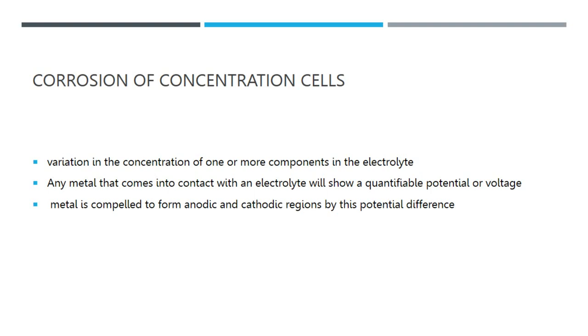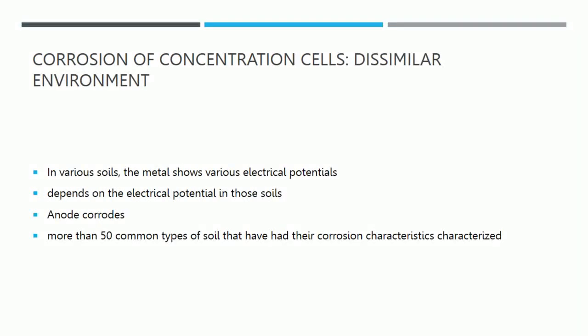Pipelines frequently pass through a variety of soil types, and in various soils the metal shows various electrical potentials. Which areas become anodic and which become cathodic depends on the electrical potential in those soils. Since the electrolyte is in contact with both the anode and cathode and both are electrically continuous, current flows, causing oxidation and reduction reactions and corroding the anodic area of the pipeline or tank. Since the ground tends to consist of horizontal layers of dissimilar soils, pipelines traversing several layers are frequently affected by this type of corrosion. Leading examples include water and oil well casings, and pipelines passing through regions with rock, gravel, sand, loam, clay, or mixtures of these elements.